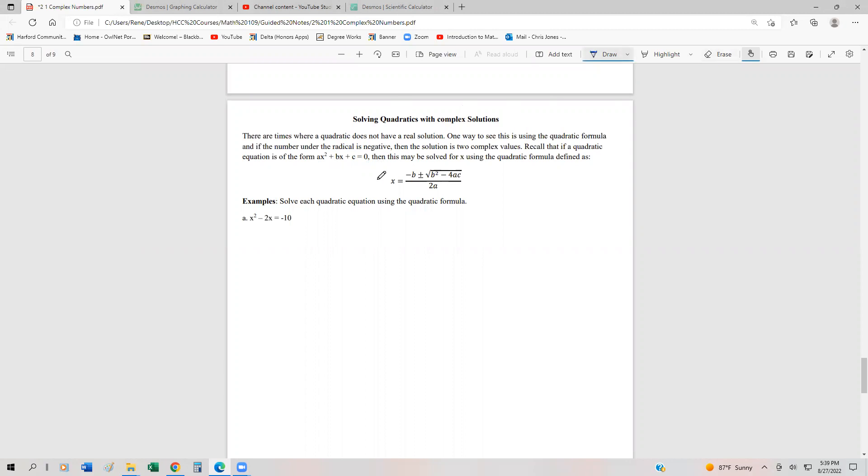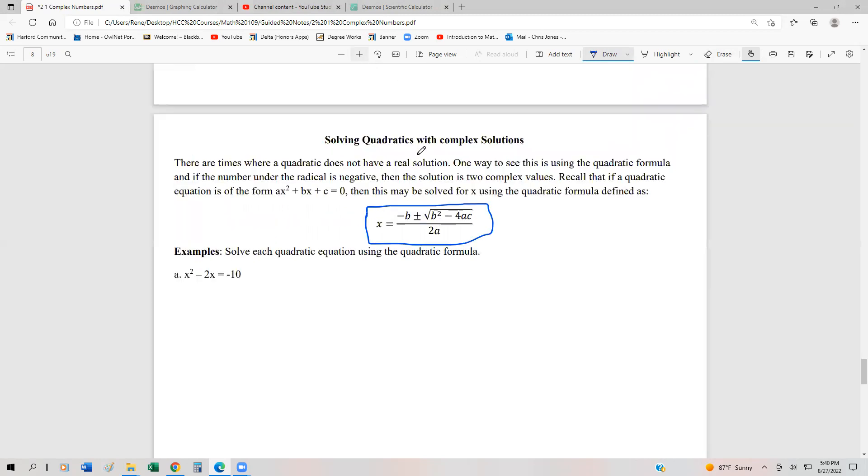We're going to use the quadratic formula to be able to solve. Sometimes what happens is underneath this radical, we get a negative number from the b squared minus 4ac. That means we just get a complex solution, and we can write it in the form a plus bi. Sometimes the numbers are really nice, sometimes they're not. Let's go ahead and take a look at some examples of this.